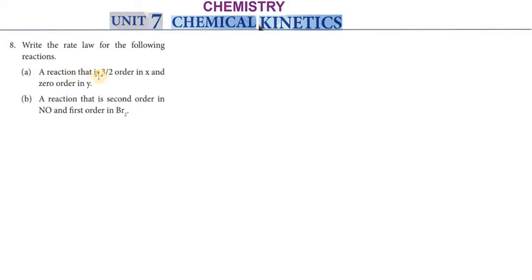So first question: a reaction that is 3/2 order in x and 0 order in y. So in the reaction, first part, 3/2 order in x plus 0 order in y gives another product.